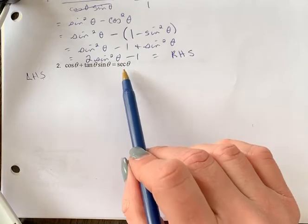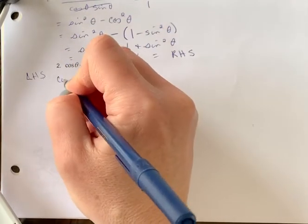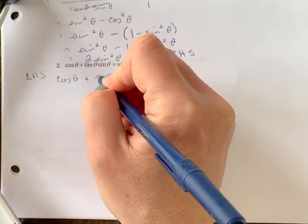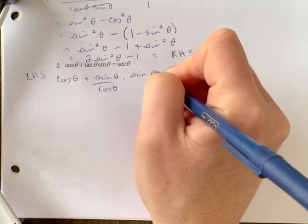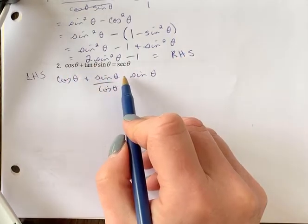So tan θ can be written as a fraction of sin θ over cos θ. All I did was replace that and kept everything else the same.